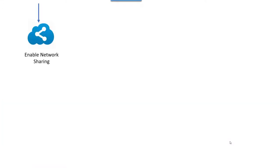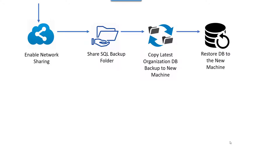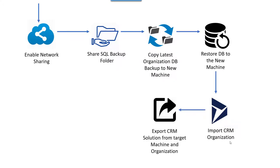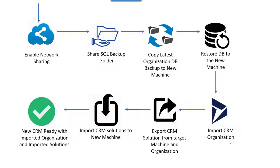After that I will enable network sharing to have a shared folder, then copy the latest backup from the target CRM organization to the shared folder, restore that organization database to the SQL server on the new machine, import that CRM organization, export the CRM solution from the target machine, and import all the solutions to the new machine. The result is a completely new CRM machine that is self-provisioned with an imported organization database and all CRM solutions from the target machine.